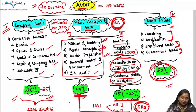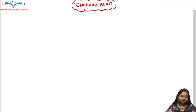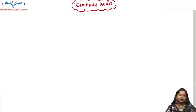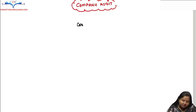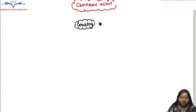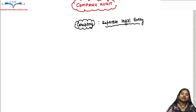Today we will start with Company Audit. Let's see what Company Audit is. What does 'company' mean? Think about it and tell me. Those of you who studied Commerce from 11th and 12th must have studied the meaning of company in Business Studies. A company is a separate legal entity. What does separate legal entity mean? It is an organization that has its own distinct existence in the eyes of the law.